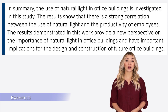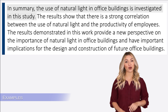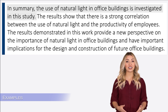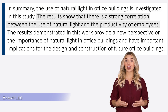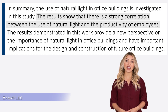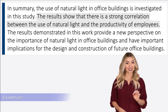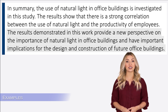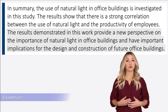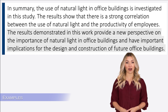Here is an example. The authors are starting their conclusion paragraph with a single-line summary of their work. They are saying that the objective of their research was to investigate the effect of natural light in office buildings. Then they are explaining what they have learned from their work — they found a link between natural light and the productivity of employees. Then they are explaining the future applications of their findings, saying that the results will be helpful in the design and construction of future office buildings.